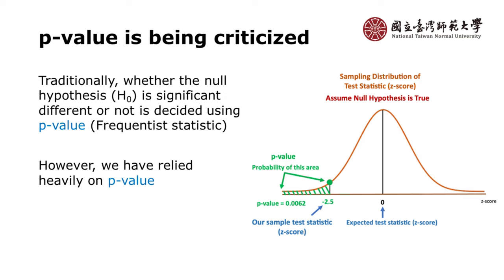But many scientists say we have a problem with p-value — what does it truly mean? P-value comes from normality, which is why when we have p-value, we need a normality test. Traditionally, whether the null hypothesis is significant or not is decided using p-value, which is what we call frequentist statistics. In frequentist statistics we have mean and standard deviation, but we have relied too heavily on p-value.